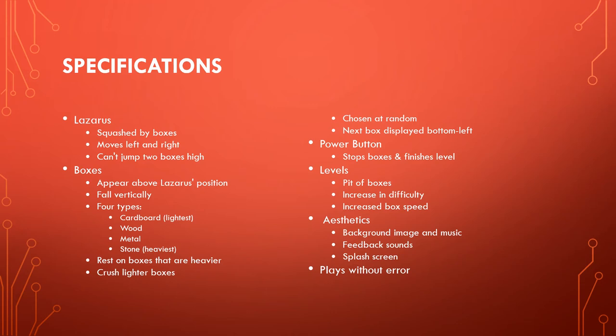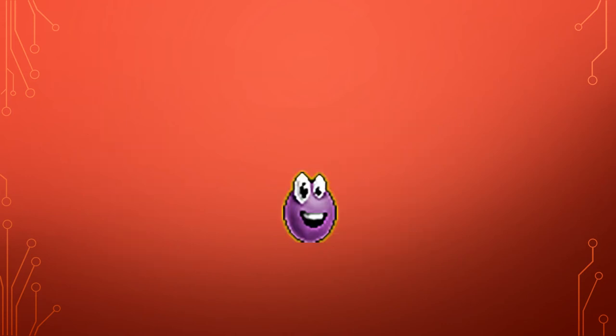Boxes crush boxes that are lighter than them. Boxes are chosen at random and the next box is displayed in the bottom left-hand corner. There is a power button which stops the boxes and finishes the level. Each level is a pit of boxes; they increase in difficulty and box speed. For aesthetics, we'll have a background image and music, feedback sounds, a splash screen, and the game should play without error.